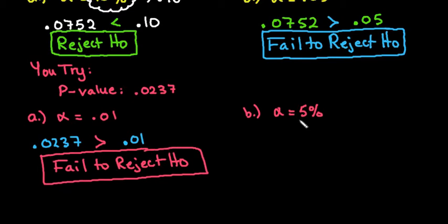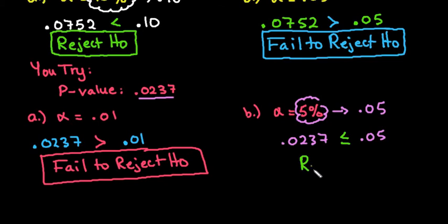For the next one remember that you do have to take the five percent and convert it to a decimal. So we would take our p-value of 0.0237 and compare it to 0.05 and for this one we can see that it is less than or equal to. On the last one I didn't write the equals to. If it's less than or equal to then you are going to reject the null hypothesis.